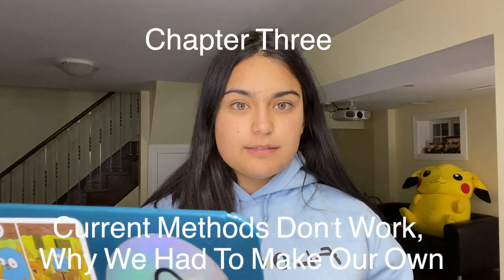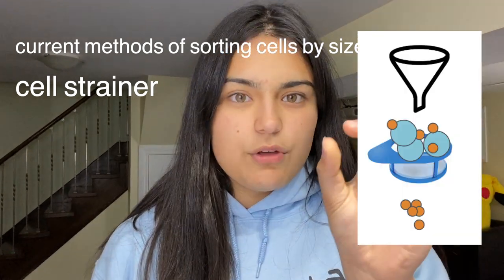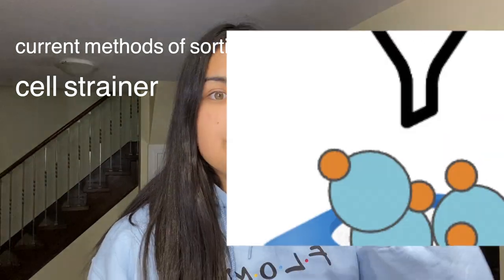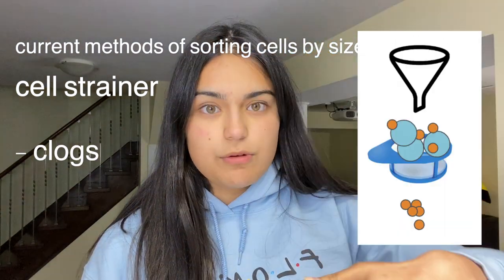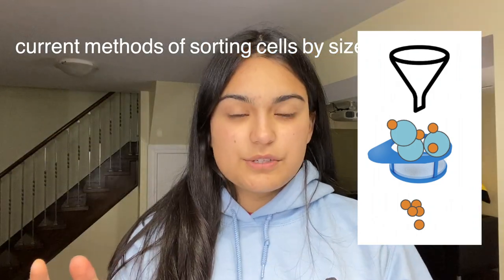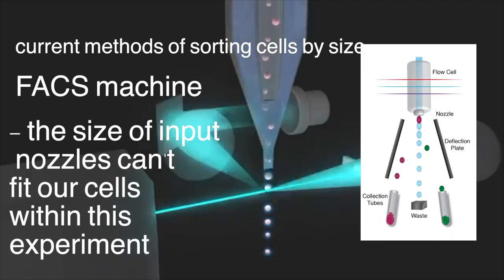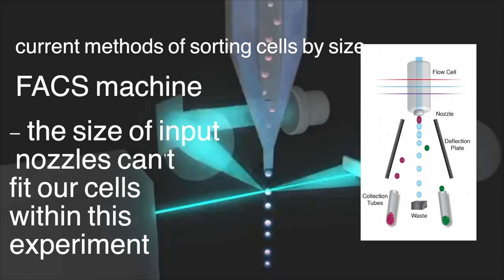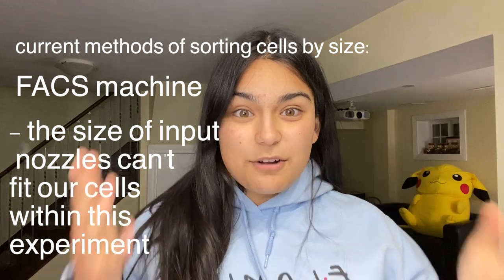If you want to sort cells by size, there are a few ways you can do it. You could use a cell strainer, which is just like a strainer, except the issue is that if the holes are a certain size, big cells can clog those holes and prevent small cells from filtering through, and the process often destroys many cells and reduces their viability. The second option is to sort by a FACS machine, but the nozzles are usually about 100 microns, and the cells we were trying to sort ranged from 40 to 200 microns, which could not be tolerated by those machines. So we had to build our own device.